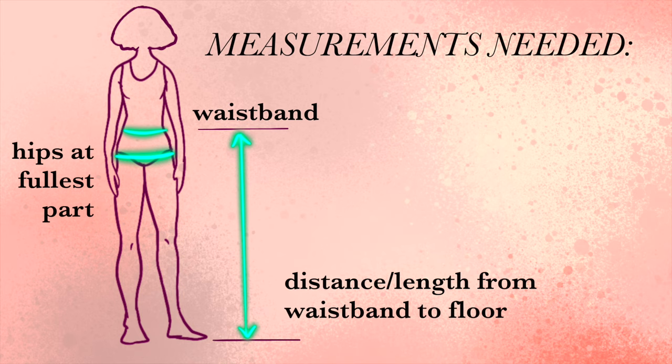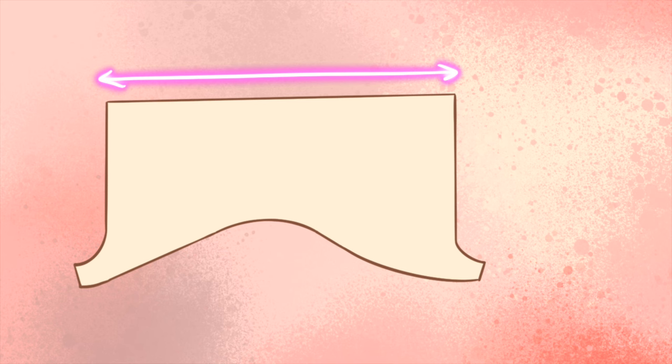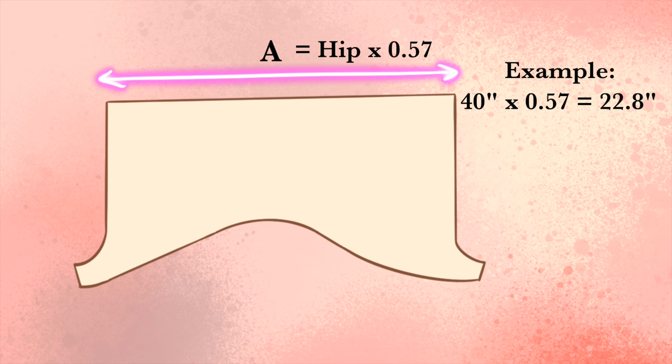First, let's figure out the size of the leg or the actual bloomer portion. To find the measurement for width A, multiply your hip measurement by 0.57. So for example, if your hips measure 40 inches, you will multiply that by 0.57, and you will come up with 22.8 inches. You could also round this up or down depending on the number. I would probably just make this 23.